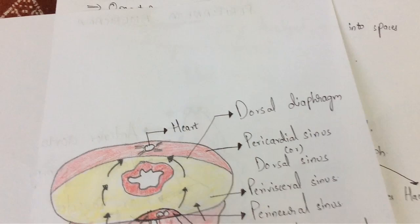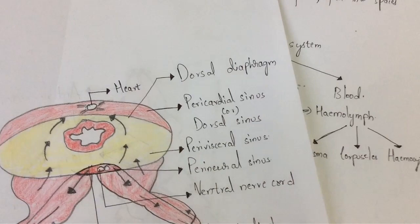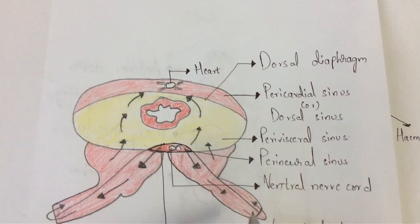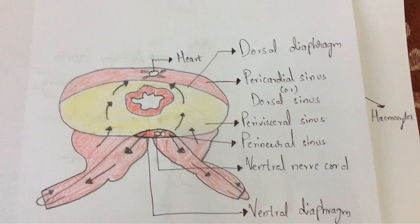The hemocoel is divided with the help of two diaphragms — the dorsal diaphragm and the ventral diaphragm. With the help of both the dorsal diaphragm and the ventral diaphragm, the hemocoel is divided into its three sinuses.